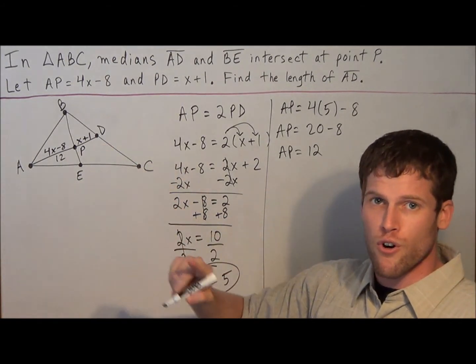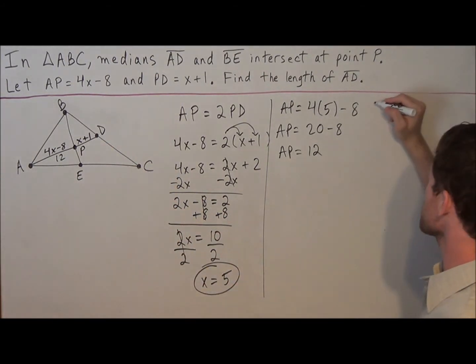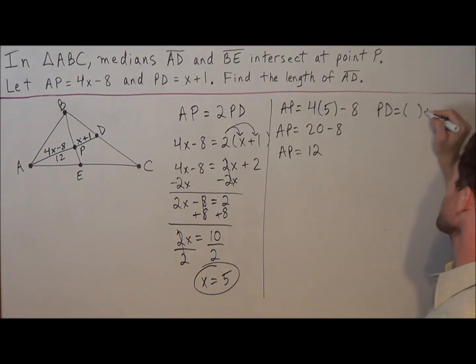So the short piece should be 6 before we do any work. But when we substitute, we see that PD is equal to x plus 1. But x is equal to 5. So we have that PD is equal to 6, which it should be.